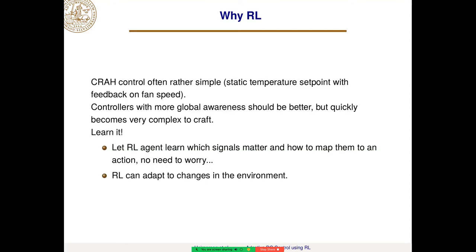Why do we choose to use reinforcement learning? CRA control today is usually very simple — you have a static temperature set point with some feedback on fan speed. Our thought is that if the controller is allowed to know more about the environment, it should be able to control better. But as you let it know the outdoor temperature, the server temperatures, and so on, it becomes very complex to handcraft that. So instead, we let it learn. The reinforcement learning agent should be able to figure out what signals are important and how to map them to certain actions.